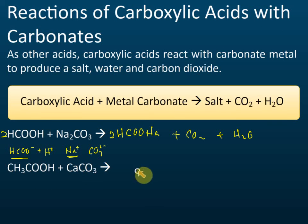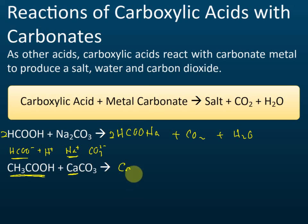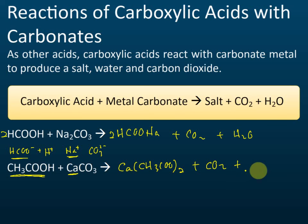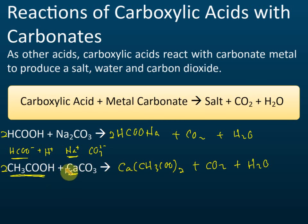For ethanoic acid with calcium carbonate, calcium forms a salt with the ethanoate ions — the negative ions of the acid. So the formula is Ca(CH₃COO)₂, plus carbon dioxide and water. We need a bracket and a 2 because the ethanoate charge is 1− and calcium is 2+.